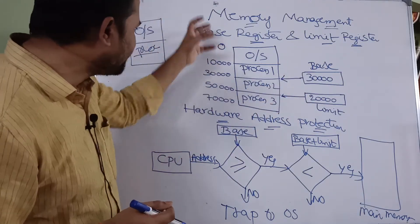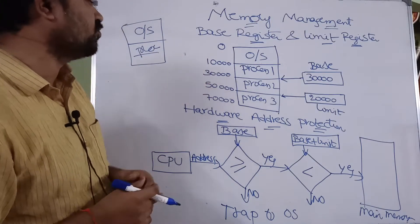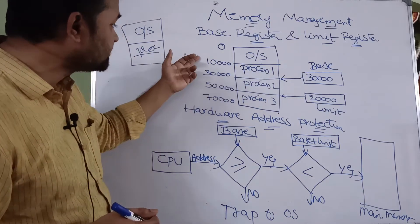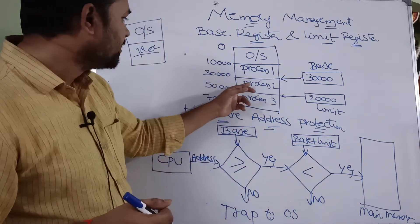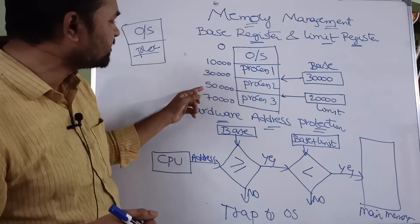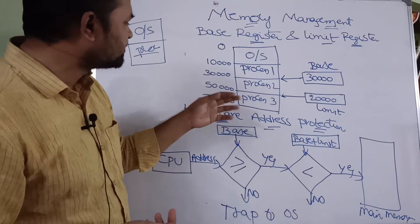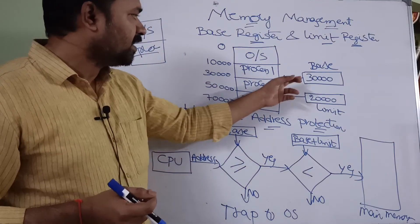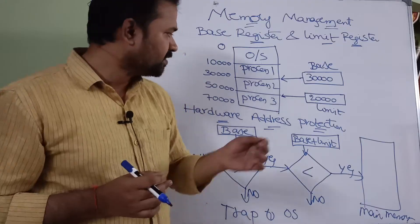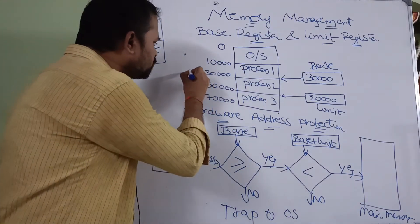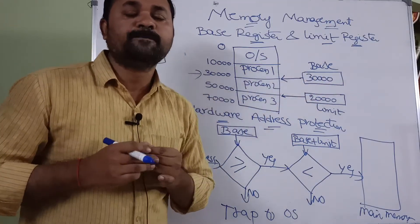The base register holds the starting address of a process. For example, the operating system starts at address 0 and ends at 10,000. Process 1 starts at 10,000 and ends at 29,999. Process 2 starts at 30,000 and ends at 49,000. So for process 2, the base address is 30,000.